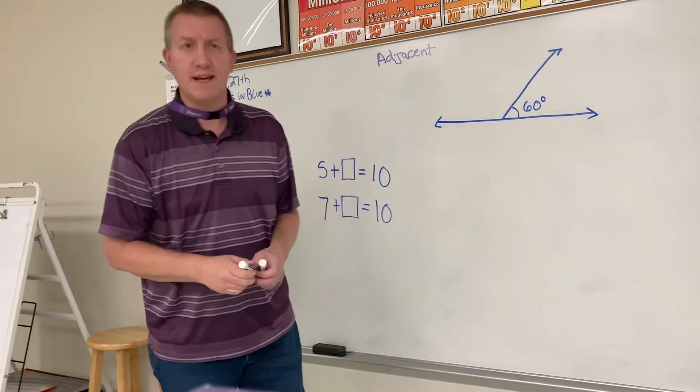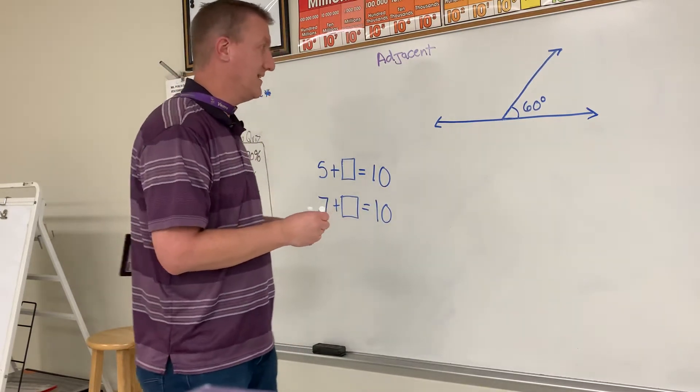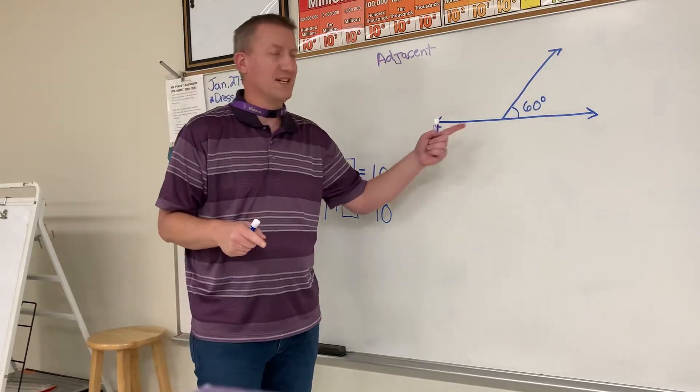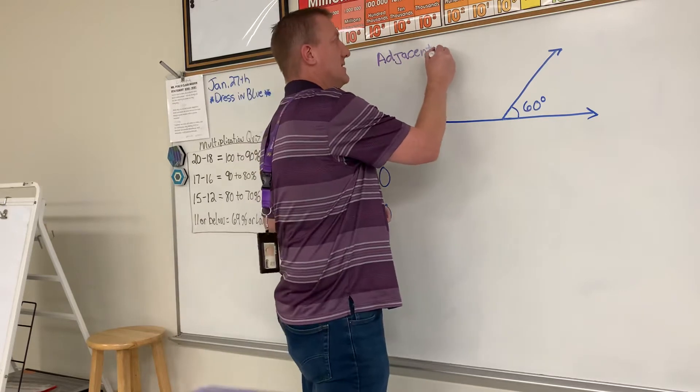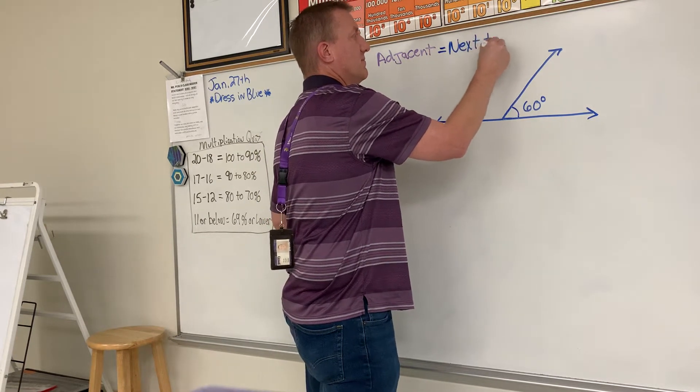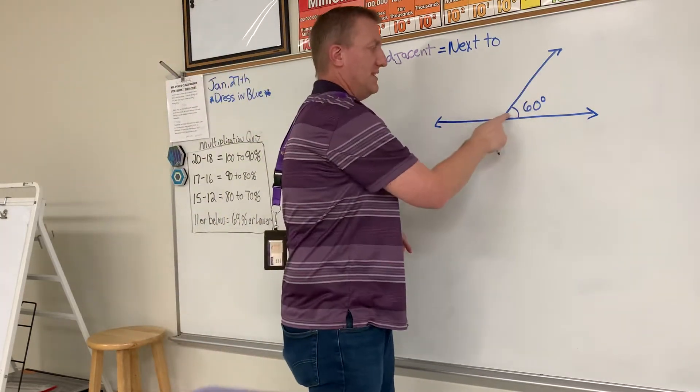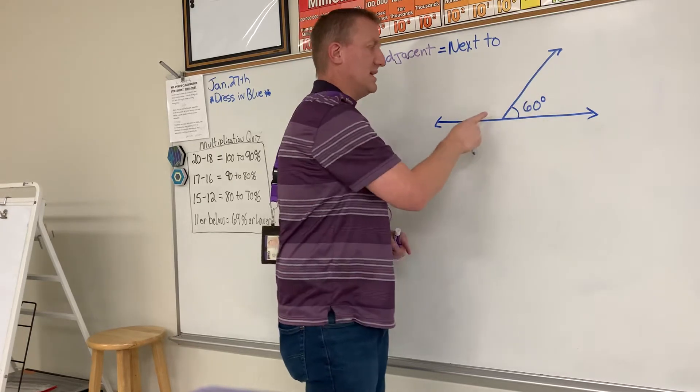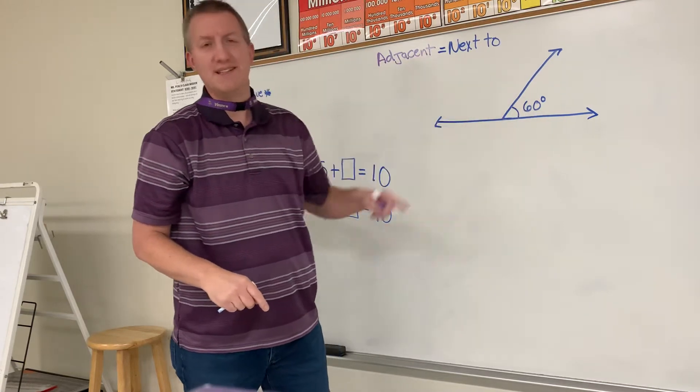Hey class and welcome back to Mr. Poole's online learning. All right, today we're going to talk about adjacent angles. Adjacent means next to. So if this angle right here is next to this obtuse angle, these angles are adjacent to each other.